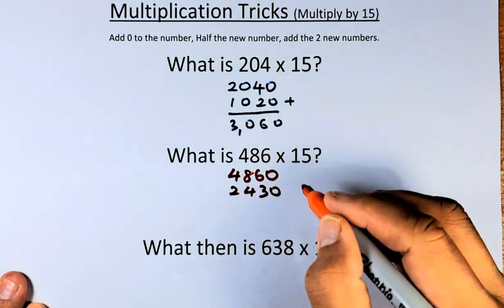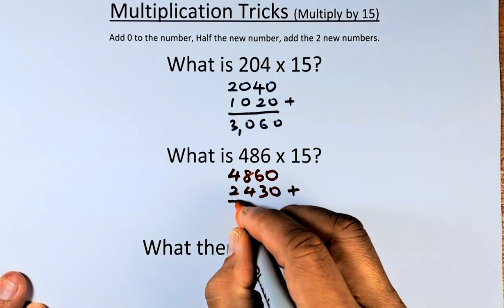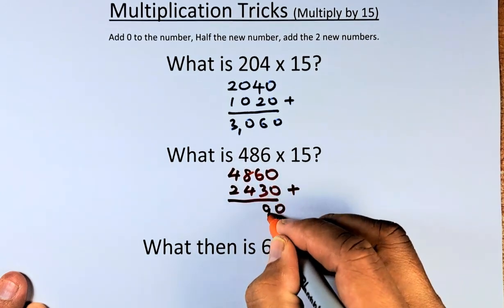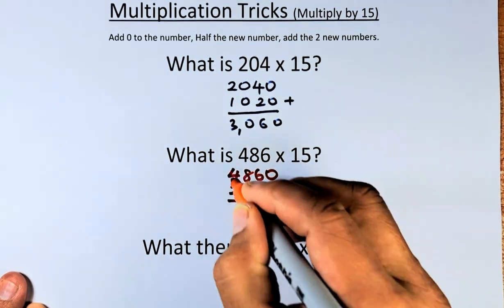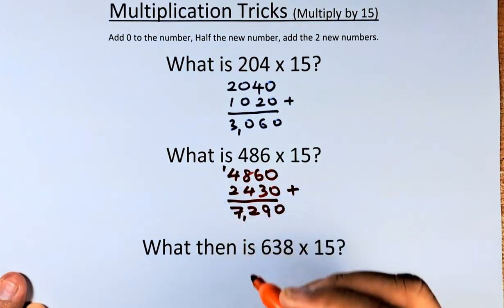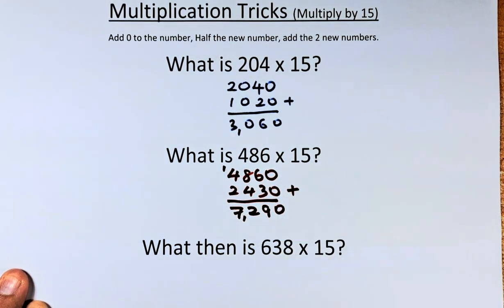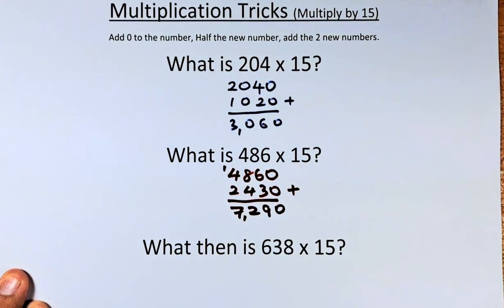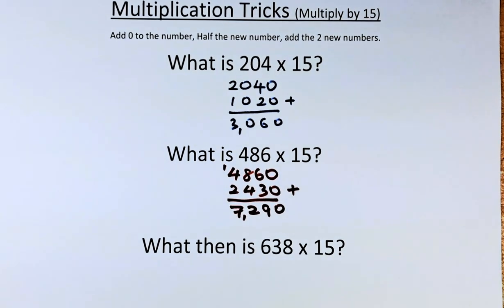Excuse me. Now we add the two numbers: 0 plus 0 is 0, 6 plus 3 is 9, 8 plus 4 is 12, carry 1. The answer is 7290 when 486 is multiplied by 15. Great!